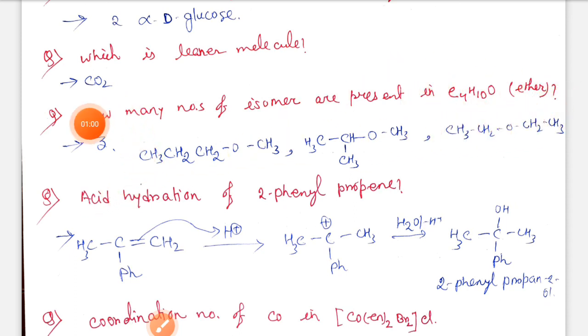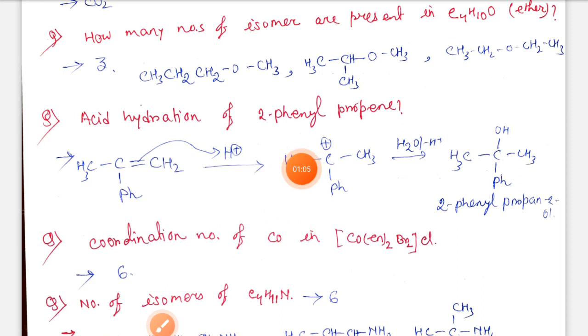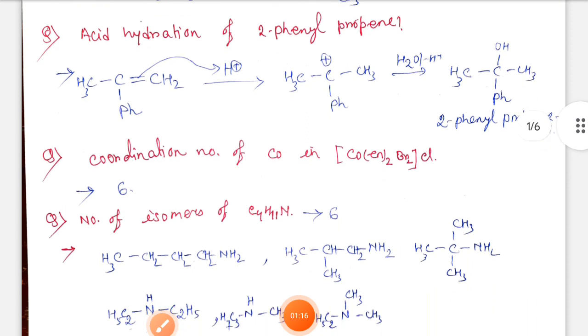Let's see the structures. Acid hydration of 2-phenylpropene produces 2-phenylpropanol. Next, coordination number of cobalt in [Co(en)2Br2]Cl - here en is a bidentate ligand and bromine is monodentate, so the coordination number is 6.